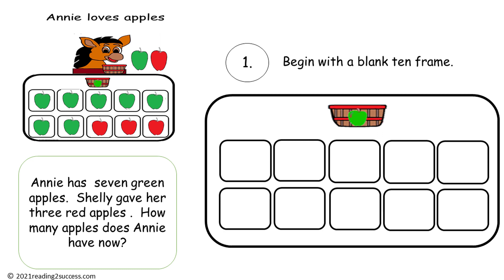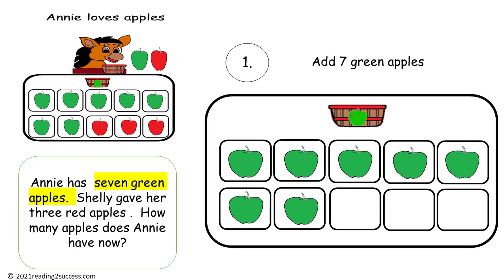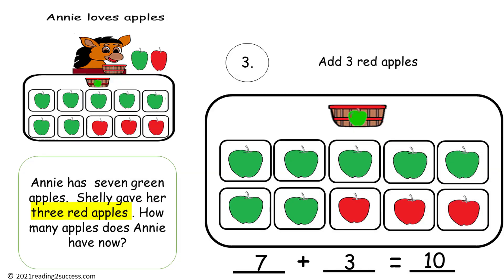Let's review the steps. Step 1: begin with a blank 10 frame. Step 2: place 7 green apples on the 10 frame. Step 3: place 3 red apples on the 10 frame. Then write the equation: 7 plus 3 equals 10.